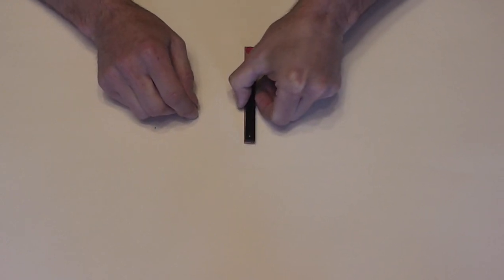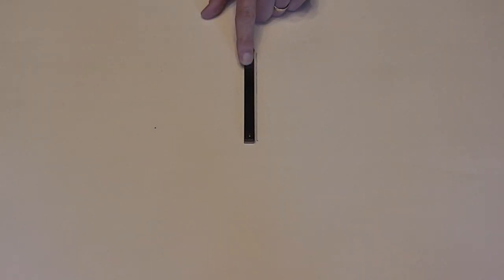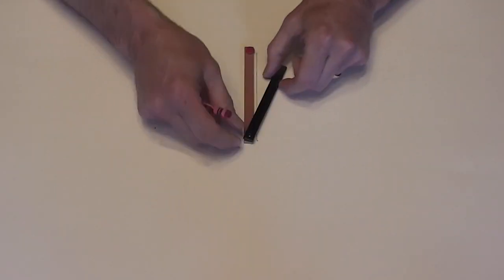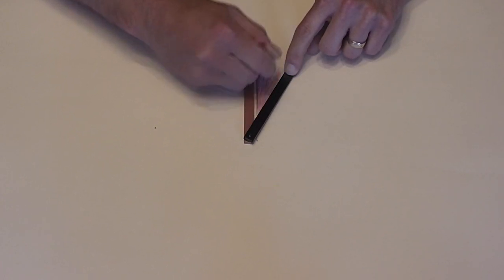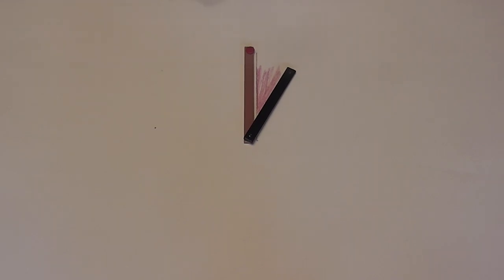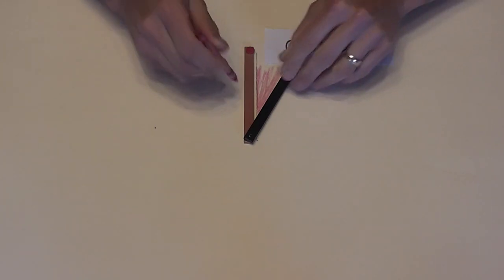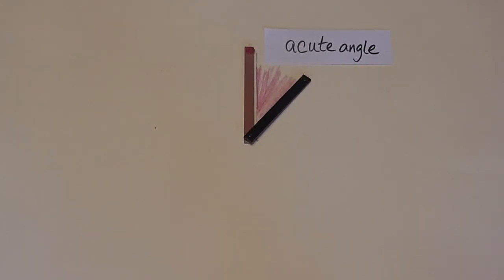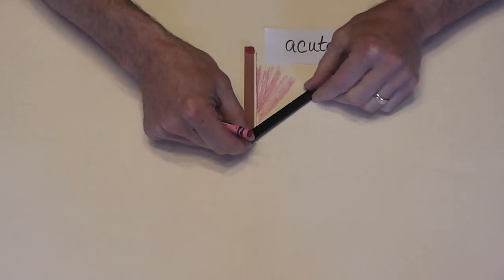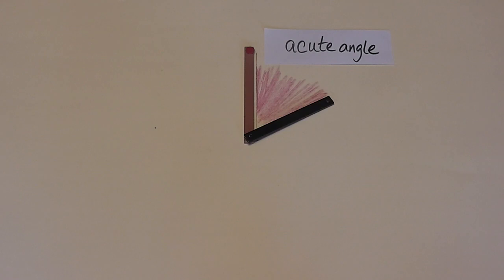I'm going to start here with my two rays on top of each other. I'm just going to draw a reference line here that we may need a little bit later. And I'm going to open this angle a little bit, color in the size, and I've created an acute angle. I can open it a little more — I still have an acute angle. I could even open it some more and still have an acute angle.